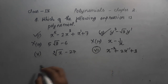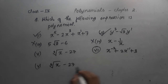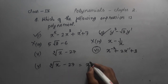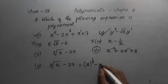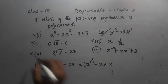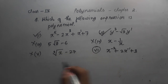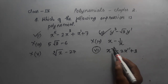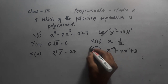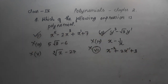For expression 5: cube root of x minus 27. This gives x to the power 1/3, which is not a whole number, so it is not a polynomial. Expression 6 also has x to the power minus 2, which is not a whole number, so it is also not a polynomial. Therefore only expressions 1 and 2 are polynomials.